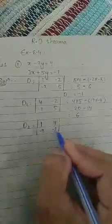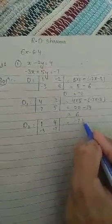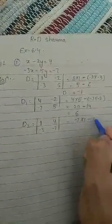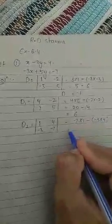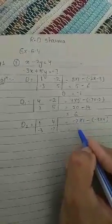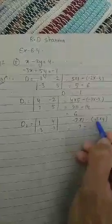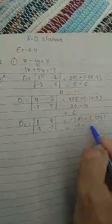So now solving their determinant, minus 7 into 1 minus minus 3 into 4. So minus 7 into 1 is minus 7, and 4 times 3 is 12.